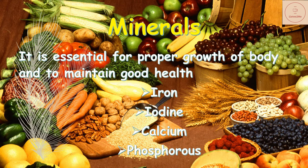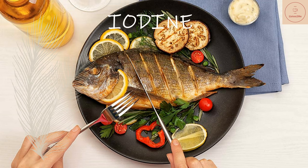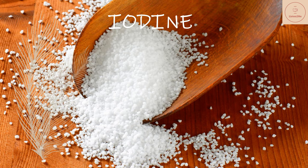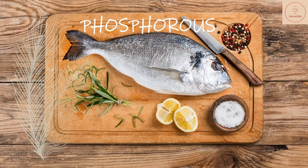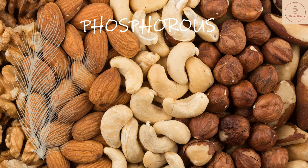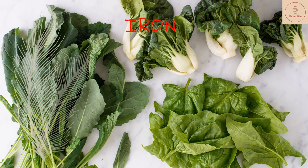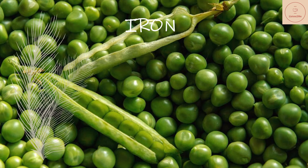Moving on to minerals. Minerals are needed by the body in small amounts. Each one is essential for proper growth of the body and to maintain good health. For example, iron, phosphorus, iodine, calcium, etc. Iodine-rich foods are fish, milk, yoghurt, bread, and iodized salt. Foods rich in phosphorus are fish, nuts, beans, dairy products, etc. Some sources of iron are dark green leafy vegetables, dry fruit, and peas.